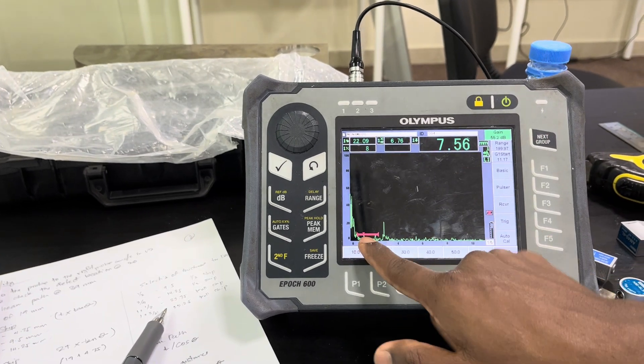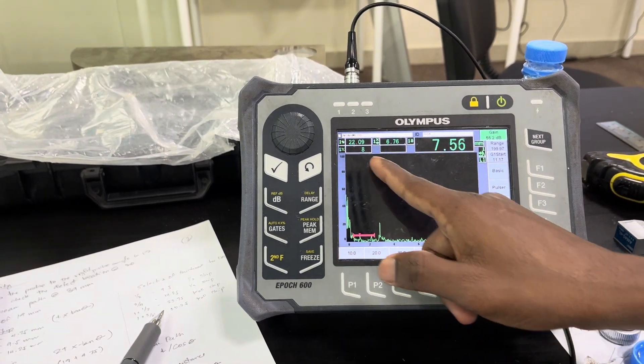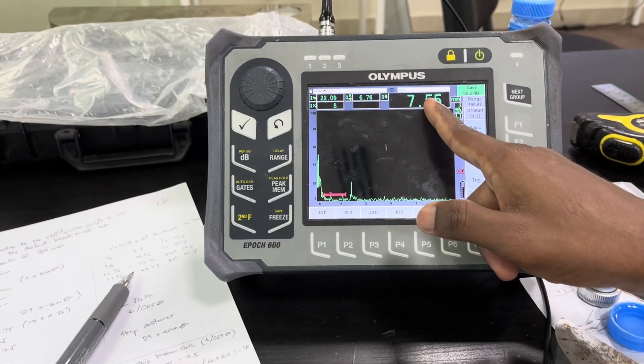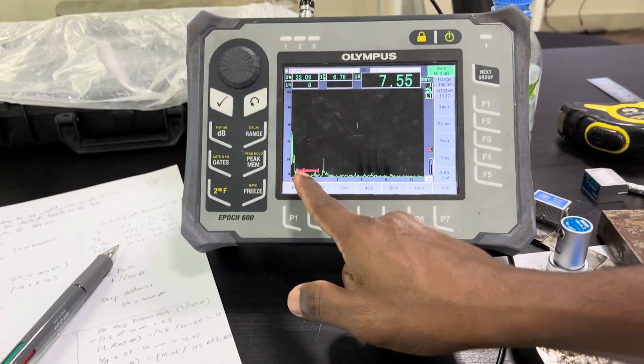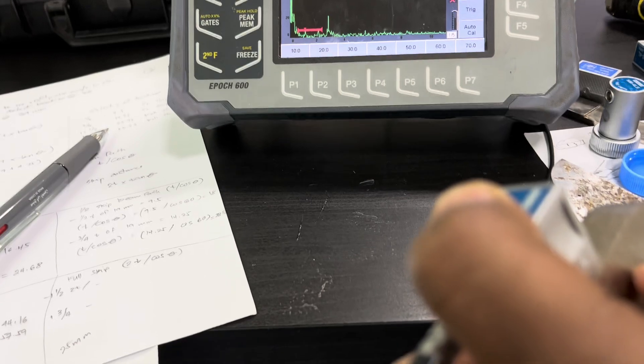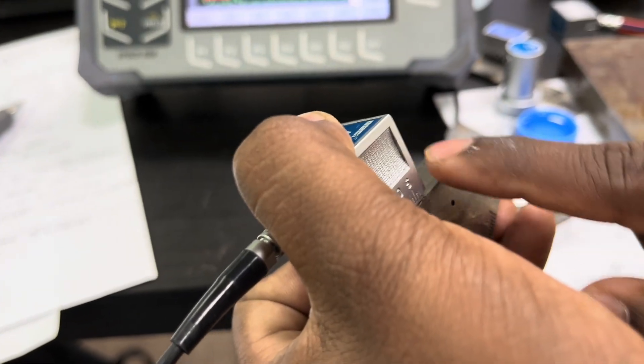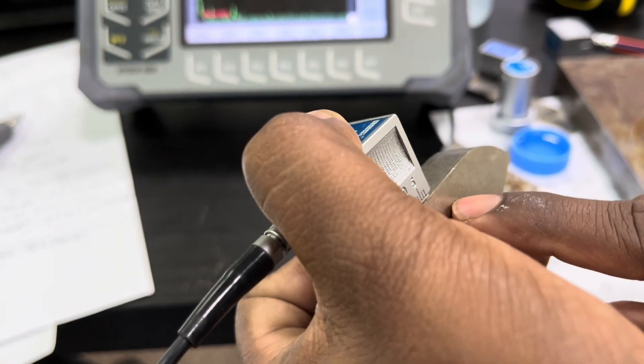This is the defect echo. Now we can see the depth here: 7.5mm is exactly the distance from the center of the hole to the surface—7.5mm depth.